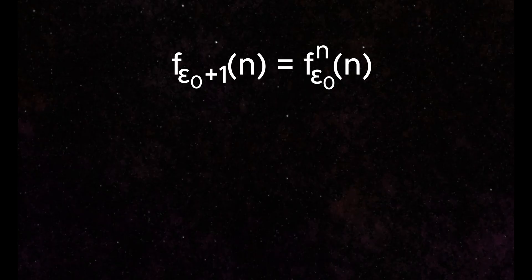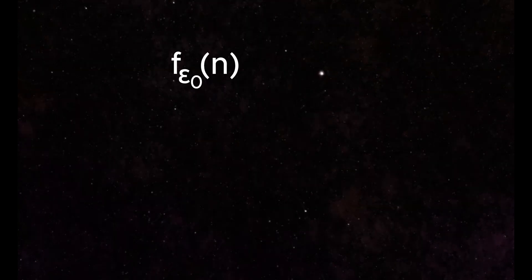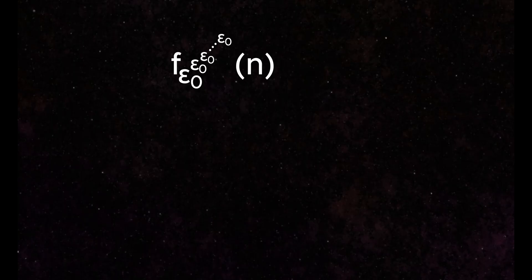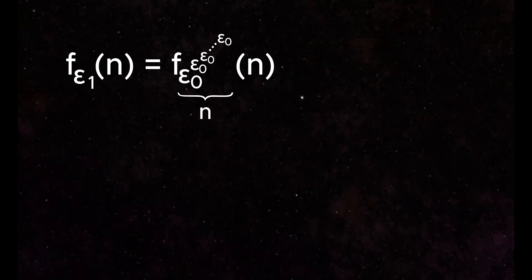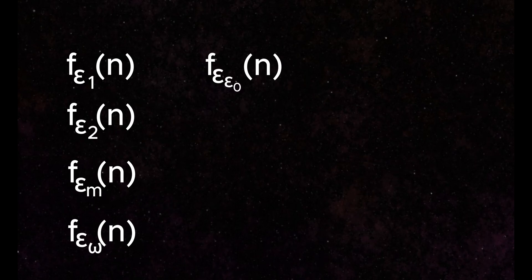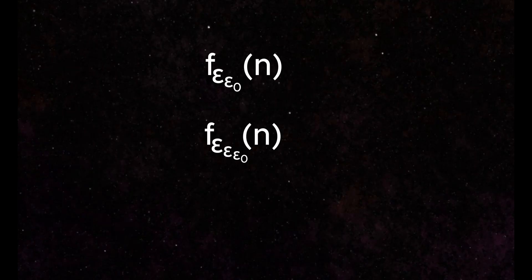What if we jump right to exponentiation or even tetration? Yes, we can build a power tower of epsilon null. This allows us to move up to f_ε₁, which is equivalent to epsilon null power towers. Following this logic, we can jump to f_ε₂, f_εₘ, even f_εω or f_ε_ε₀. Now this can also continue until it becomes cumbersome.